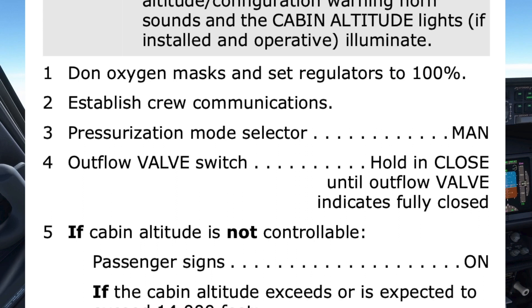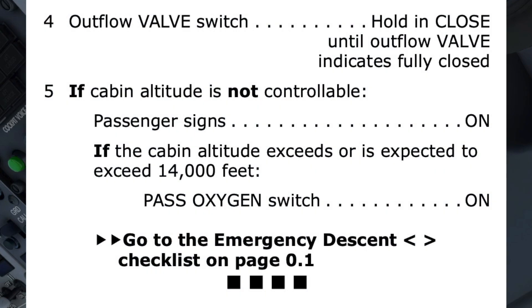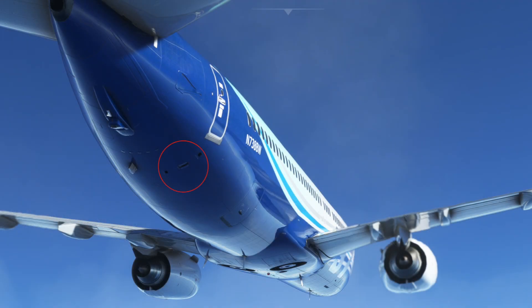Step 3 directs the pressurization mode selector to be switched to manual mode. Step 4 has the outflow valve switch held in the close position until the outflow valve is fully closed. This is an attempt to seal the airplane and stop further loss of cabin pressure. The outflow valve is located on the fuselage below the right horizontal stabilizer, and it modulates between open and closed to control the pressure of the cabin by venting pressurized air supplied by the packs to maintain the desired cabin pressure.